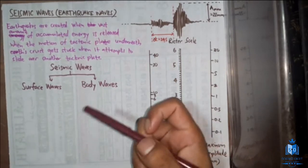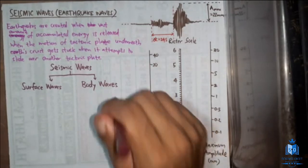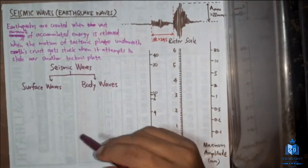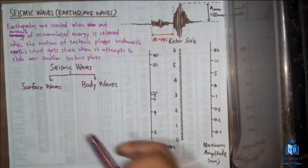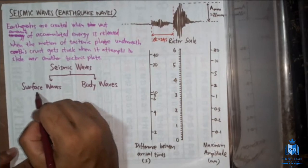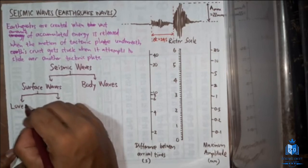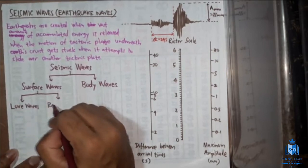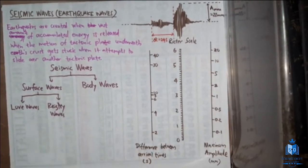Body waves travel underneath the surface, so they affect buildings whose foundations have gone very deep — for example, very large buildings with pile foundations, where the foundation is set at a great depth. Surface waves are categorized into two types: Love waves and Rayleigh waves, named after the scientists who discovered them.